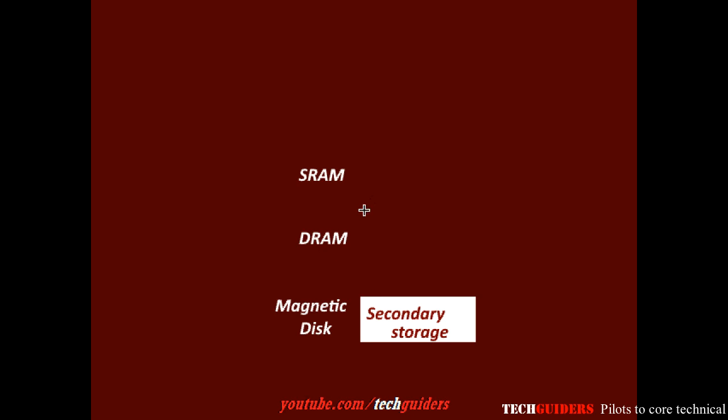Using magnetic disk we build our secondary storage level of the memory hierarchy, which keeps all the required programs and data in a permanent way. Since it is very inexpensive, we can have a very large volume of it. But it is very slow, and hence the processor never tries to directly access it.